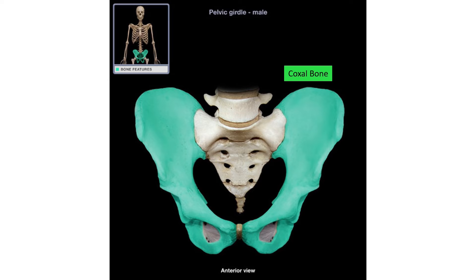Both hip bones together make the pelvic girdle, also called the coxal bone. The meeting point in the midline between the bodies of the two coxal bones is called pubic symphysis. The joint connecting the pelvic girdle to the axial skeleton is the sacroiliac joint — here is the right sacroiliac joint.